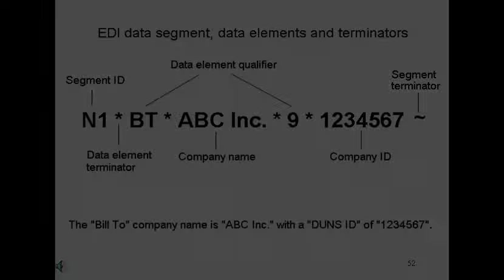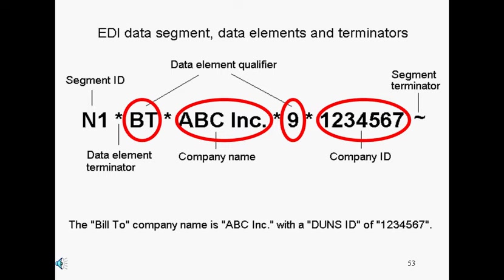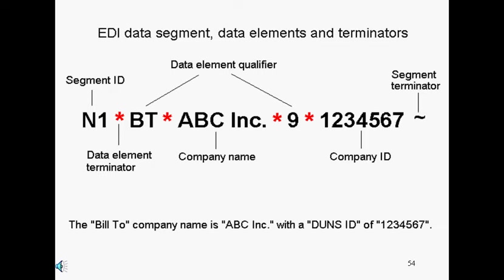Transaction sets are made up of data segments, and in turn the data segments are made up of data elements. In this example, we have four data elements that are separated by element terminators. Element terminators can be of any character, but the asterisk is commonly used. At the end of a data segment is the segment terminator. Segment terminators can be of any character or string — in this example, we use the tilde.